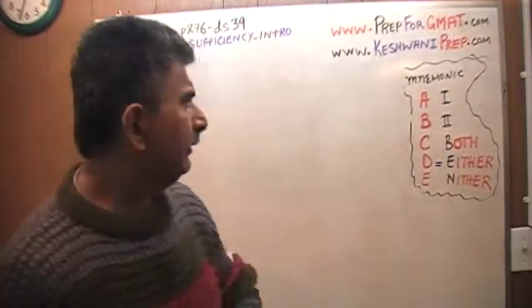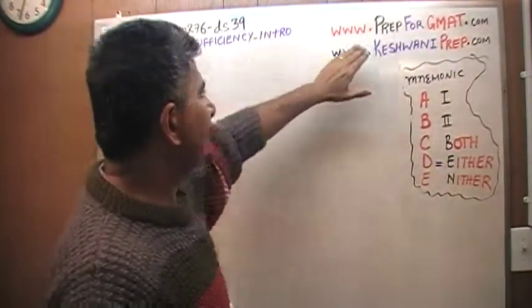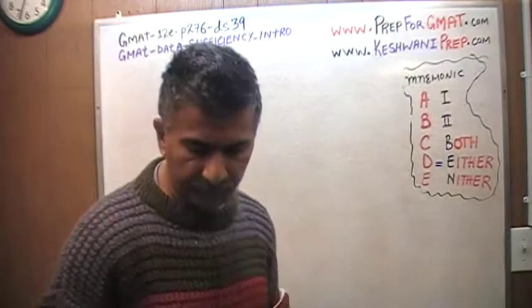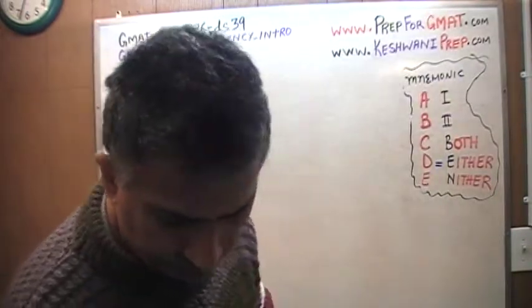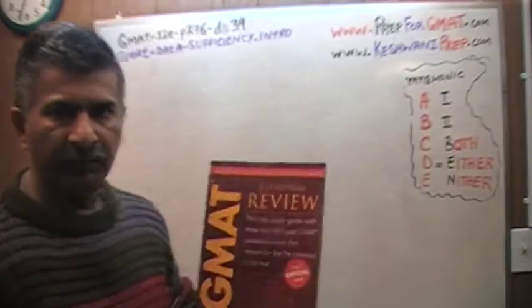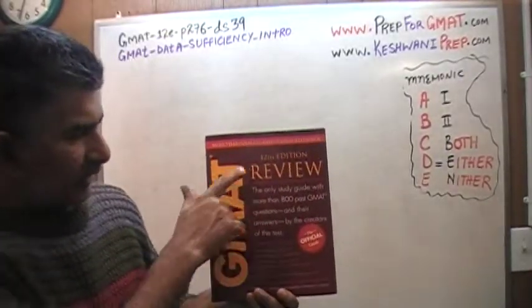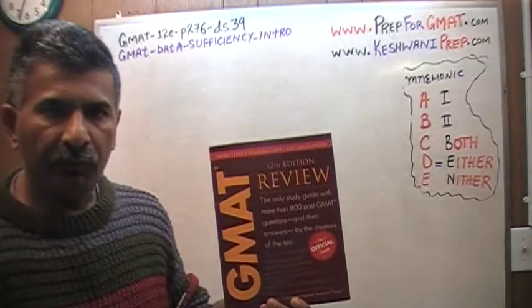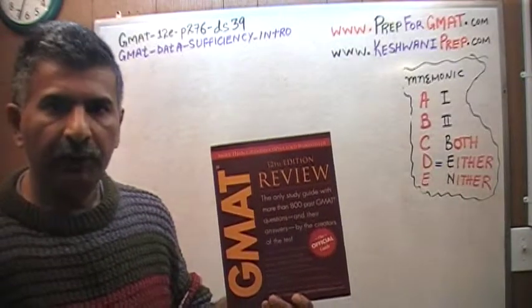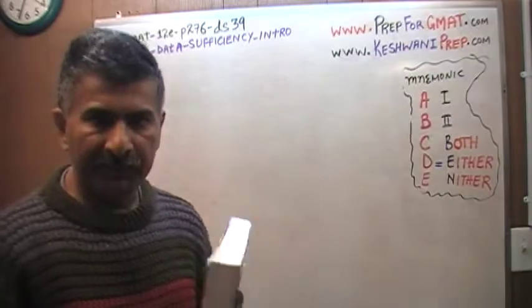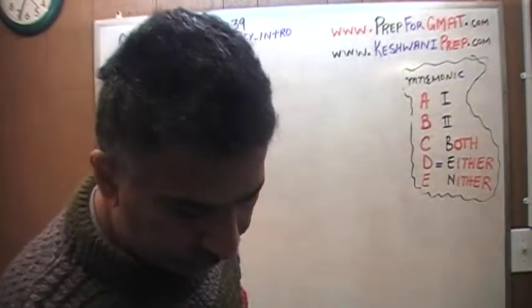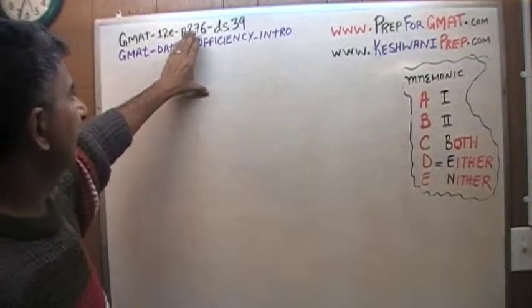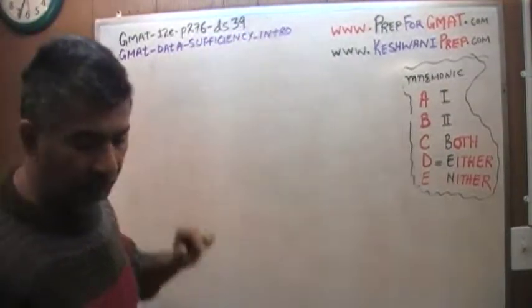Hello, my name is Keshwani, that's K-E-S-H-W-A-N-I. I have been solving data sufficiency problems for GMAT out of this book here, GMAT Review, the official guide, 12th edition. If you do not own this book already, purchase one immediately — you should be able to find it at mba.com. The problem I'm about to solve is on page number 276, data sufficiency problem number 39.